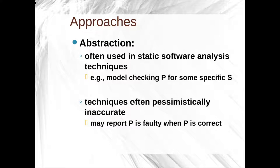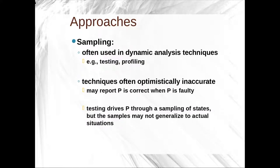The problem is that this technique is not always correct — it's oftentimes very pessimistic. In many cases, your program will run just fine without you declaring the types, or if you switch a signed int for an unsigned int, or use 4 bytes for a character instead of 1 byte. Using this abstraction method, we may report P as faulty when P is actually correct. When we do sampling, we're relying on statistical techniques — we're usually running the program, testing and profiling it, checking stuff randomly or checking paths.